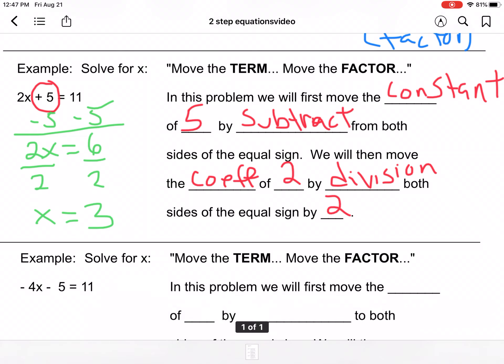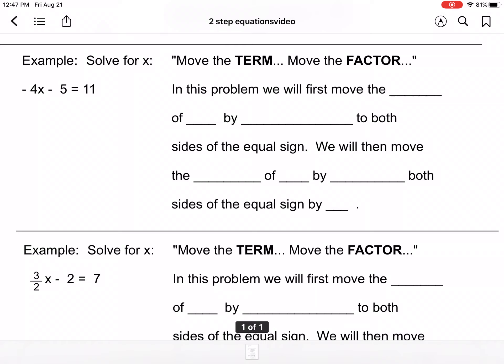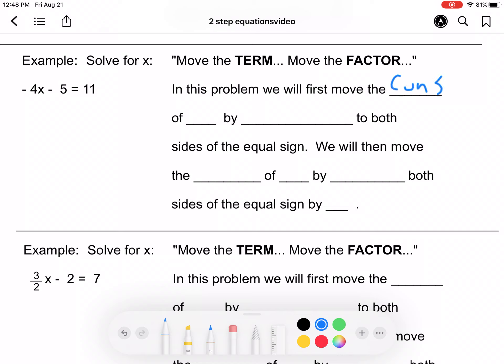So then we look at our next example. So the same processes still apply. We start out. We will move the constant. So right there I circle it.